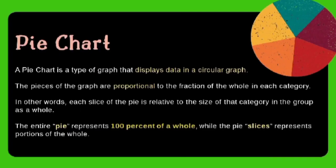Next is the definition of pie chart. A pie chart is a type of graph that displays data in a circular graph. The pieces of the graph are proportional to the fraction of the whole in each category — each slice of the pie is relative to the size of that category in the group as a whole. The entire pie represents 100% of a whole, while the pie slices represent only the portions of the whole. Pie charts are one of the most commonly used types of data visualizations, used in business for turnover, profit, and exposure, and also in quantitative and qualitative research.